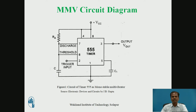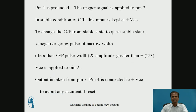Pin number 4 and 8 are joined together and connected to plus VCC. With the help of this circuit diagram, we are going to discuss the operation of the monostable multivibrator. Pin number 1 is connected to ground. The external trigger signal is applied to pin number 2, that is the trigger input of IC555.